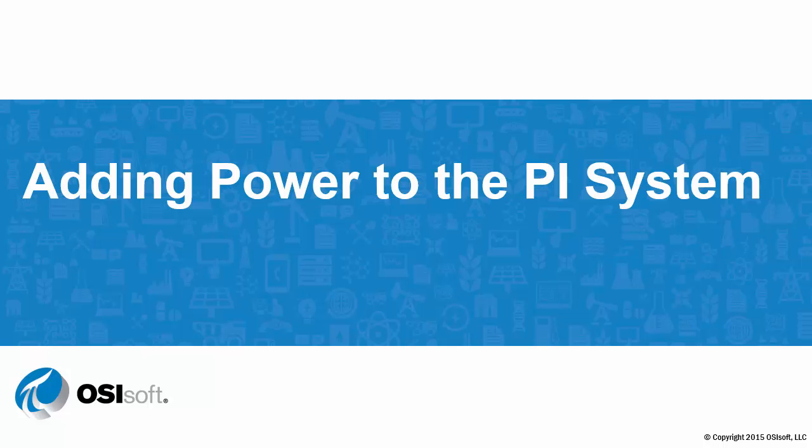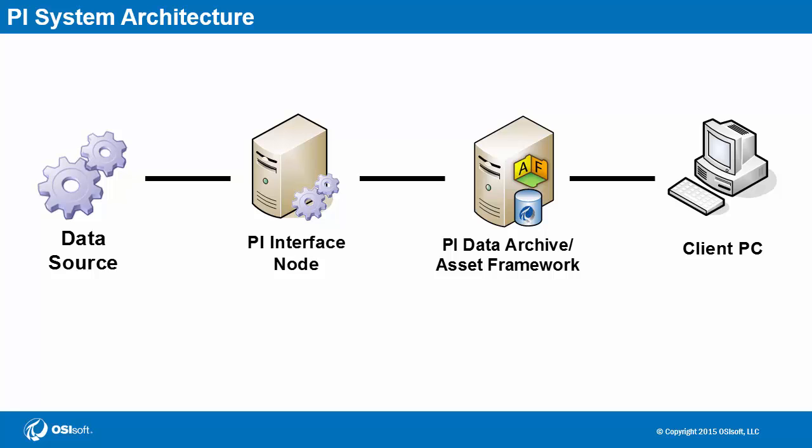So far, we've seen the flow of data from data source to end user. And although this is complete in itself, we've mainly seen diagrams that show just the minimal amount of components required, namely data source, PI interface, PI data archive, and end user. But as we'll soon see, there's a lot more paths for data to flow through, like from one company to another, and also through custom applications built on top of the PI system.